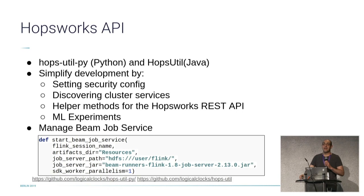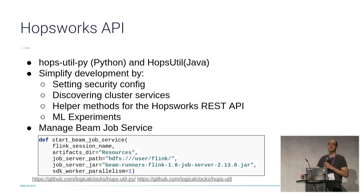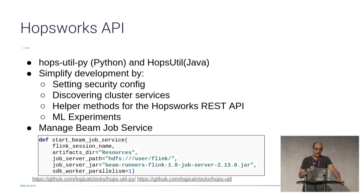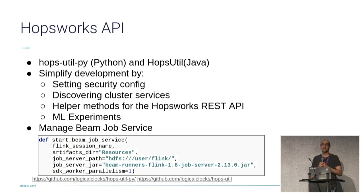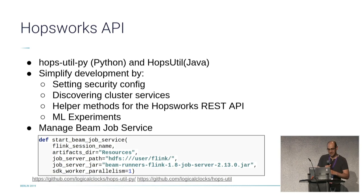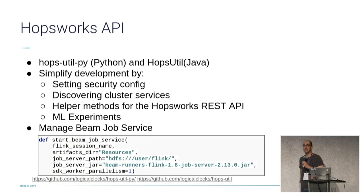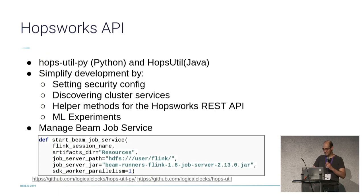Hopsworks provides APIs to help you in programming. We have two APIs: hopsutil.py for Python and hopsutil.java for Java. They simplify writing applications for Hopsworks — for example, setting security, since Hopsworks is a secure platform. It helps you set TLS certificates. You can also discover different services through code, such as discovering Kafka brokers and their endpoints. Everything you can do from the UI is also accessible through the REST API — for example, getting information about currently running jobs or querying any status of the Hopsworks platform. You can also set up ML experiments and monitor and control them through the ML experiments interface.